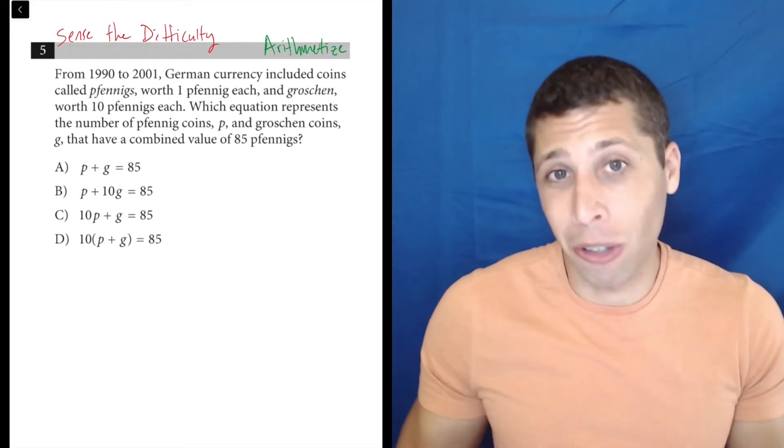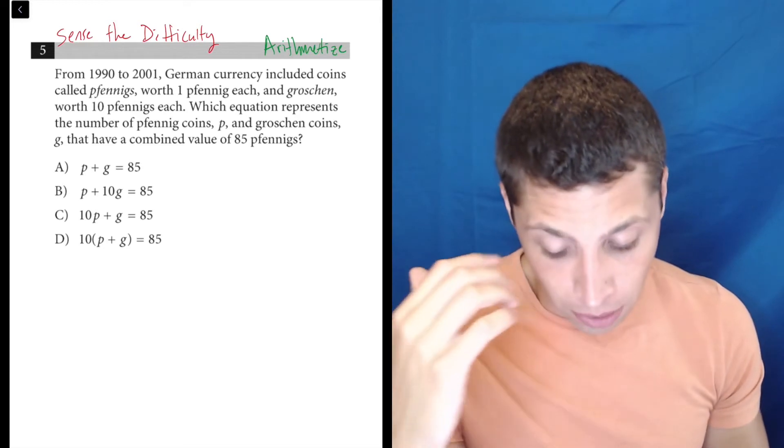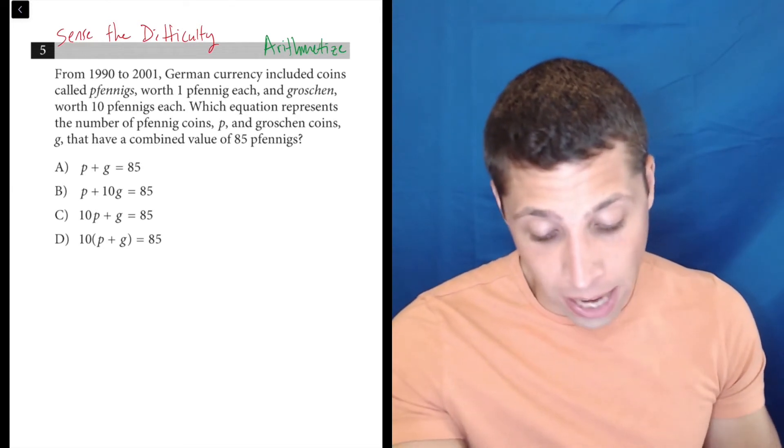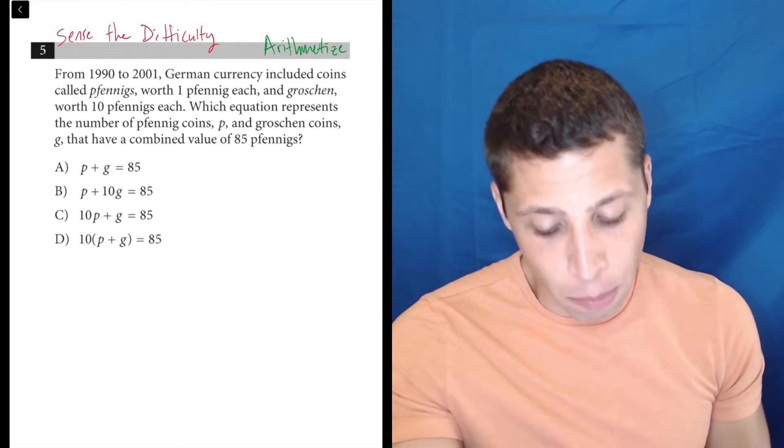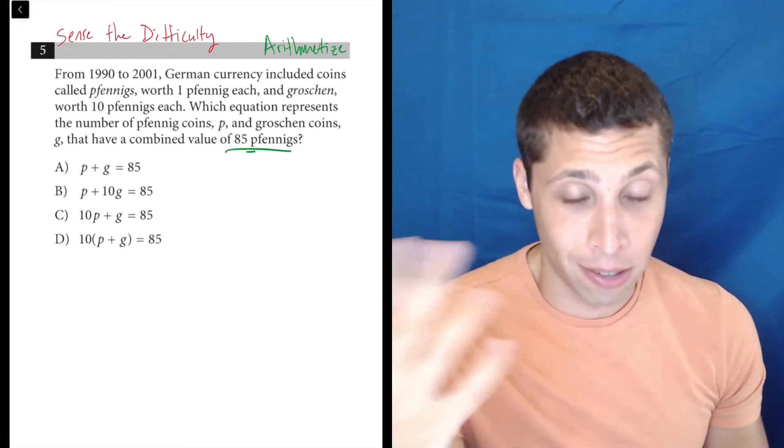But when we do that, we want to make sure that it makes sense with the story. So what's going on here? We're talking about this currency. There's coins called Fennings that are worth one Fenning each and Groshens worth 10 Fennings each, which equation represents the number of Fenning coins P and Groshen coins G that have a combined value of 85 Fennings.